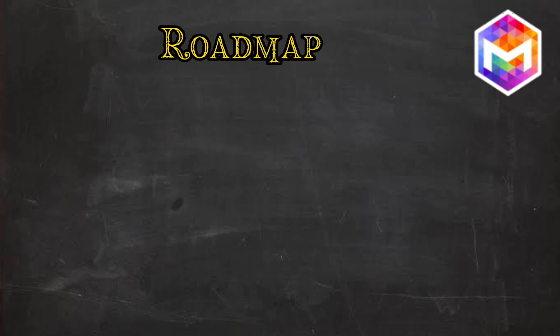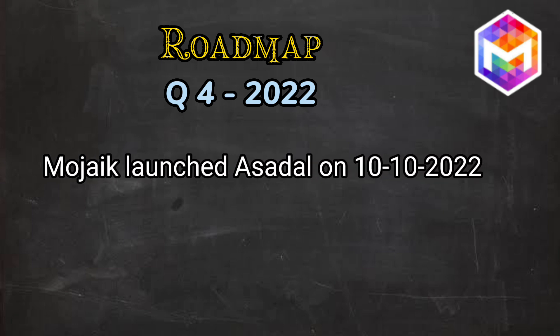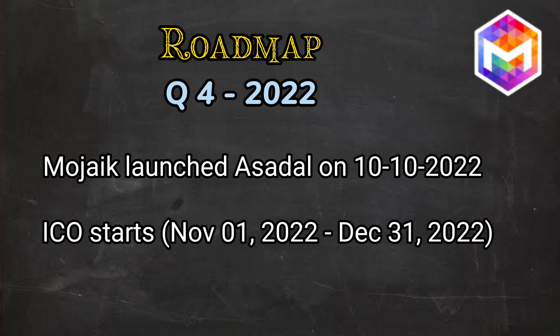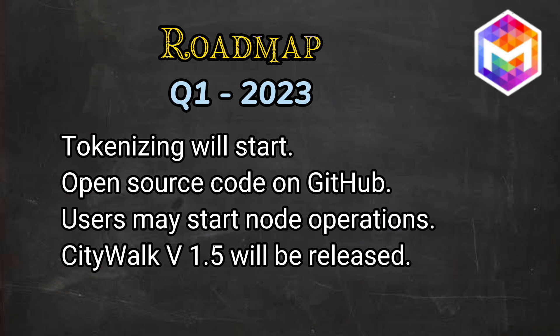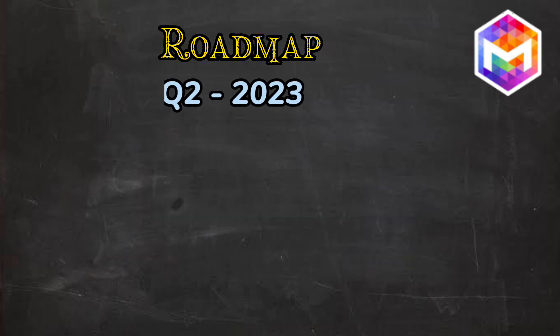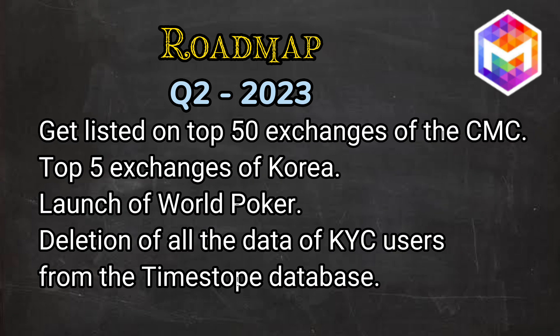Let's have a quick overview of Mojak's roadmap. In Q4 2022, Mojak launched its first blockchain, Asadal, and from November 1st the ICO will start. In Q1 2023, tokenizing will start, open source code will be released on GitHub, users may start node operations, and the CityWalk NFT fighter version will be released. In Q2 2023, the goal is to get listed on the top 50 exchanges of CoinMarketCap or the top 5 exchanges in Korea. The World Poker launch will occur, and all KYC user data will be permanently deleted from the TimeStope database.